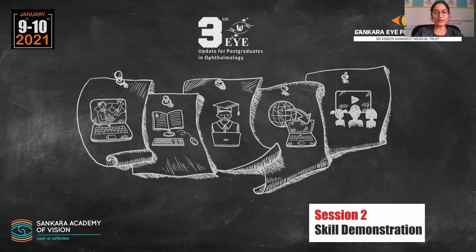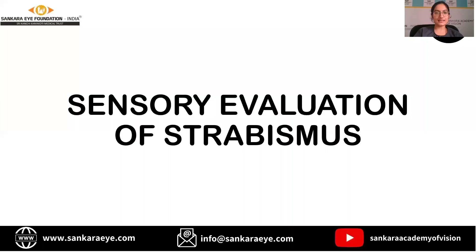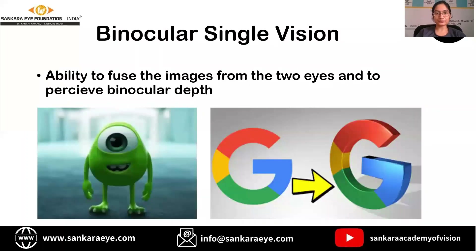Good evening everyone. We will now be discussing the sensory evaluation of strabismus. Binocular single vision is the ability to fuse the images from two eyes and to perceive binocular depth. Simply put, it is seen from a single cyclopean eye instead of two separate eyes, and it helps to appreciate an object three-dimensionally.